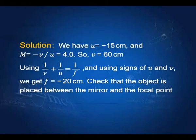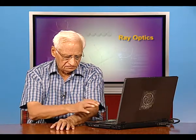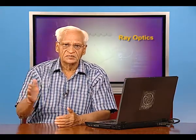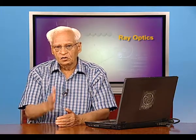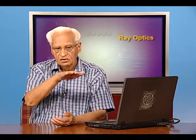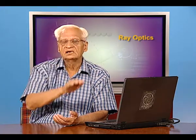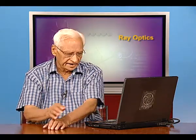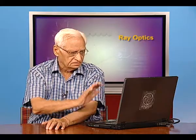So we have V and U. We use the mirror formula 1/V + 1/U = 1/F and get F equal to minus 20 centimeters. This is correct because the focal length of a concave mirror is negative according to our convention — the Cartesian convention. Light comes from the left; all distances measured to the left are positive, all distances measured to the right are negative, all distances measured upward from the axis are positive, and all distances measured downward from the axis are negative.